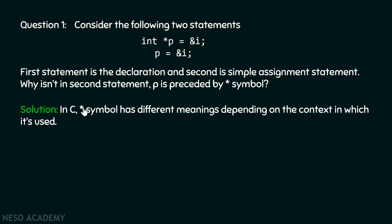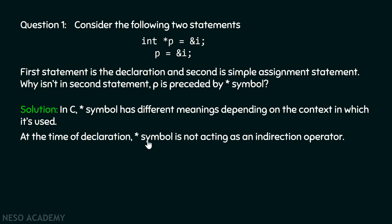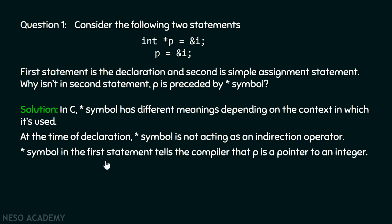In C, the star symbol has different meanings depending on the context in which it is used. At the time of declaration, the star symbol is not acting as an indirection operator. When you are declaring a pointer, star symbol tells the compiler that p is a pointer to an integer.